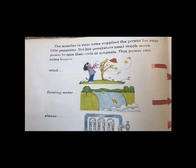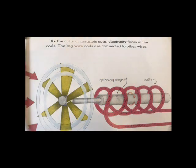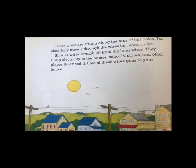This power can come from wind, flowing water, or steam. As the coils or magnets spin, electricity flows in the coils. The big wire coils are connected to other wires. These wires are strung along the tops of tall poles. The electricity travels through the wires for many miles.